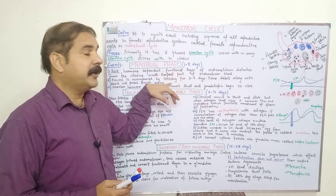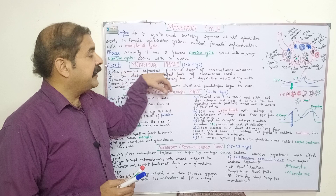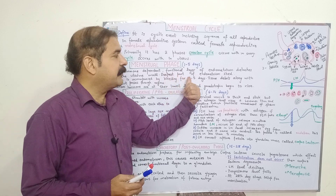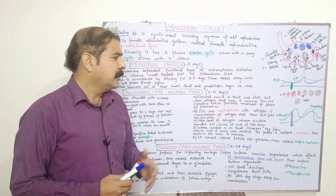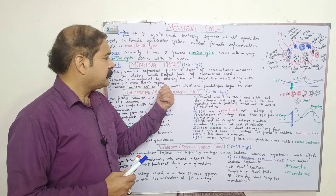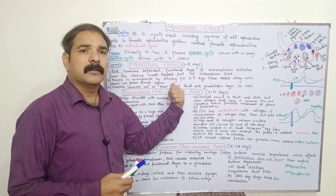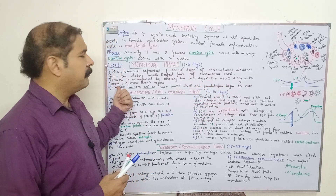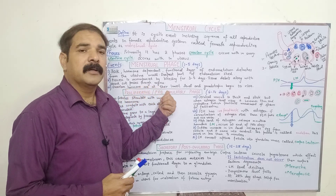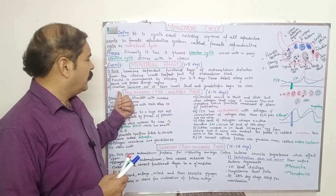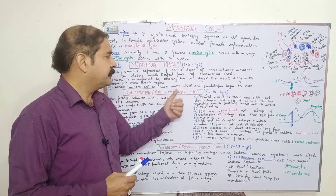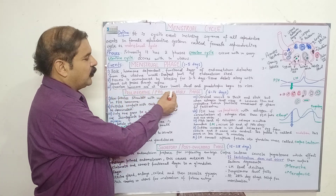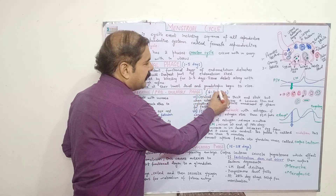The menstrual phase is initiated with the thick hormone-dependent functional layer of the endometrium detaching from the uterine wall, and the deepest part of the endometrium sheds. This leads to bleeding for three to five days, and tissue debris along with blood passes through the vagina. Ovarian hormones are at their lowest level during this phase.